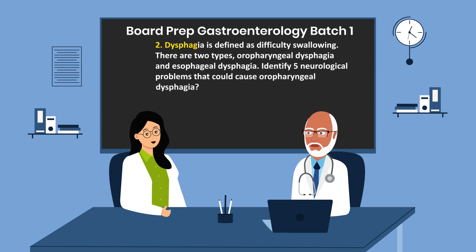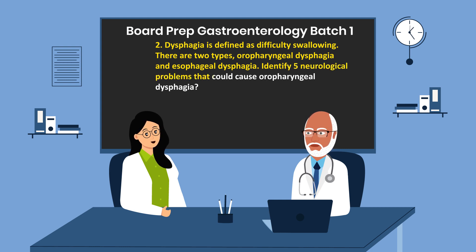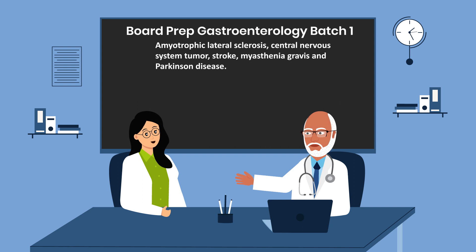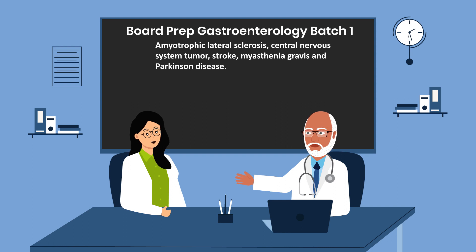Question 2. Identify five neurological problems that could cause oropharyngeal dysphagia. The answer is amyotrophic lateral sclerosis, central nervous system tumor, stroke, myasthenia gravis, and Parkinson's disease.